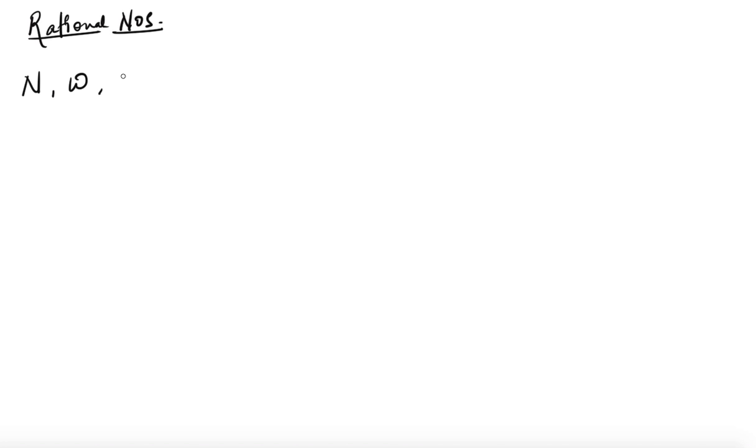Hi everyone, welcome back. In this video we'll be learning about a very common type of numbers that we come across day to day — that is rational numbers. I'll be telling you what rational numbers are, how they came into existence, and various things about rational numbers. Before coming to what rational numbers are, let us recall the different types of numbers we have studied till now: we started with natural numbers, then whole numbers, then integers, and sometimes decimals.